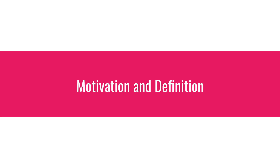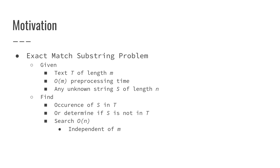First, the motivation and definition. A motivation could be an exact match substring problem. If we're given a text T of length M, and we want linear processing time for that length, and we're also given some patterns — some unknown strings S of length N — one motivating problem could be to find all the occurrences of this pattern S in text T. We want these searches to be done in linear time, and importantly, this linear time is related to the length of the patterns N and not of the text M. So it's independent of M.